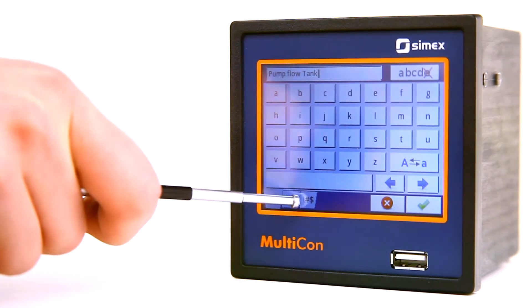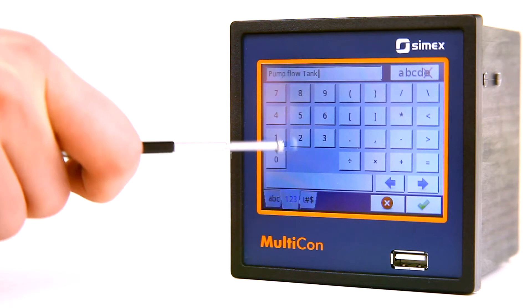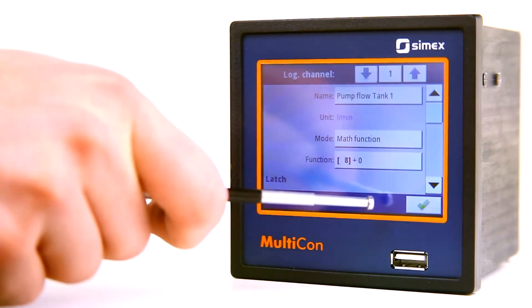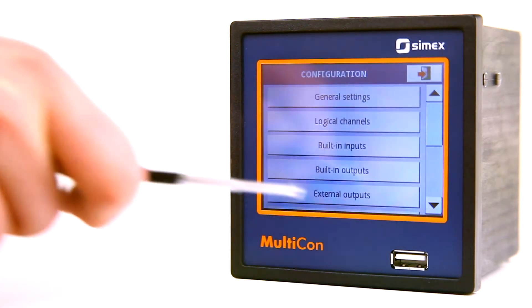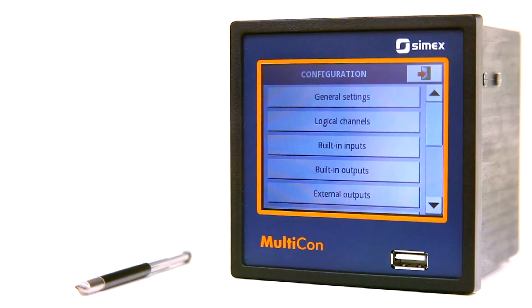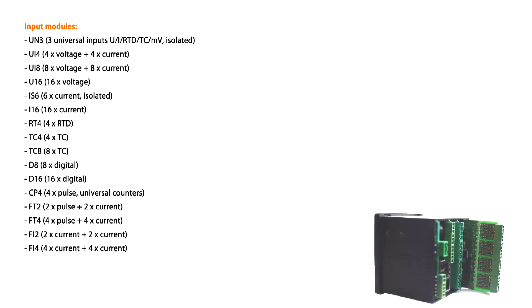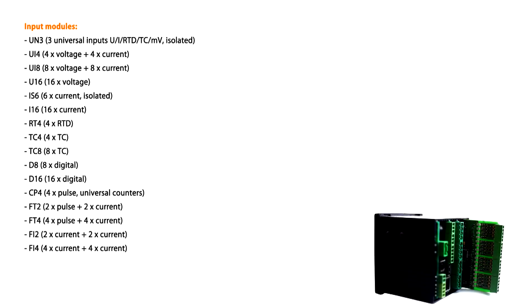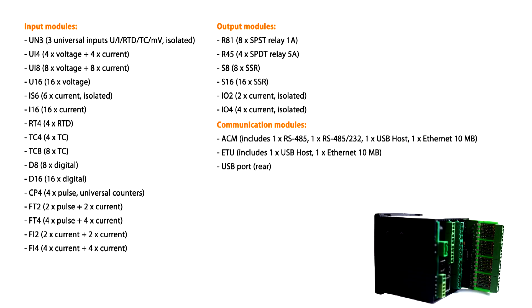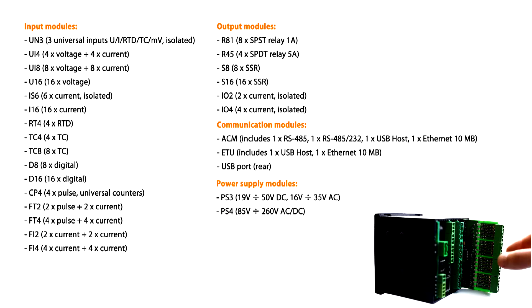The most important feature of Multicon is a large number of physical measurement inputs and controlling outputs. Thanks to the modular design, Multicon has high setup flexibility. We offer 16 types of input modules and 6 output types.